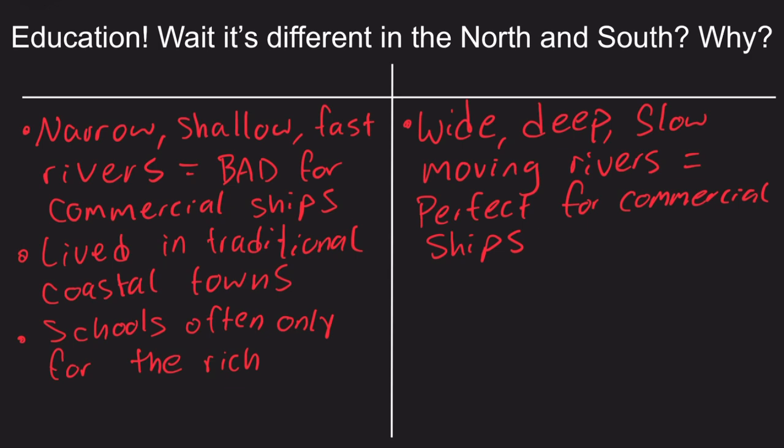Additionally, the climate of the southern states — frequently very warm and good for farming — allowed people to want to live alongside rivers where they could easily trade, instead of in towns. This leads to people often being very spread out — like driving through a rural area where you can count the houses you've seen after several miles of driving on one hand.